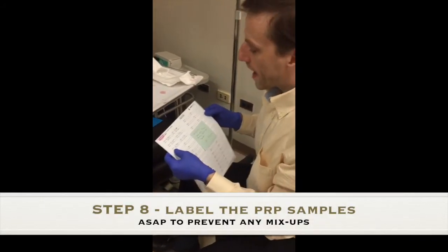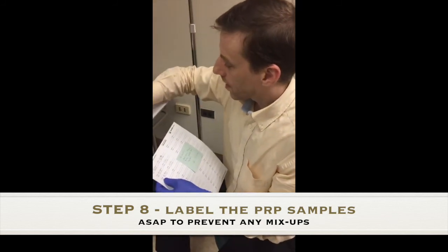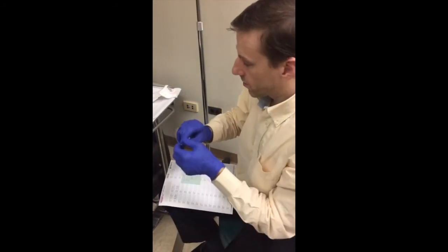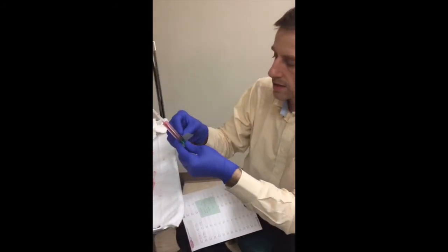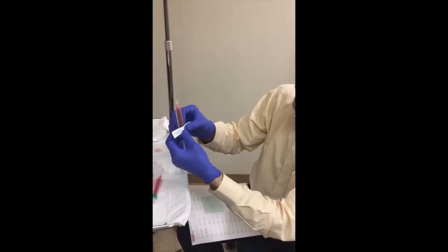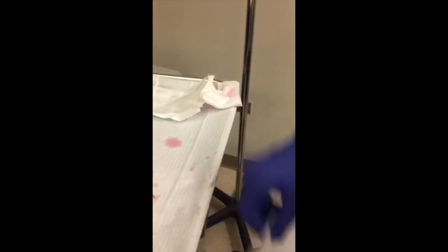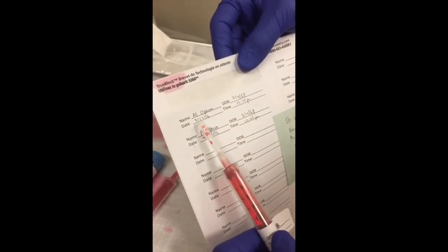Once you have your samples ready, I think it's appropriate to label each syringe with a label. So in this case, we have Al Opecia. That's our patient. And here's the name, date of birth, two, four, six, eight, who do we appreciate, today's date and the time.